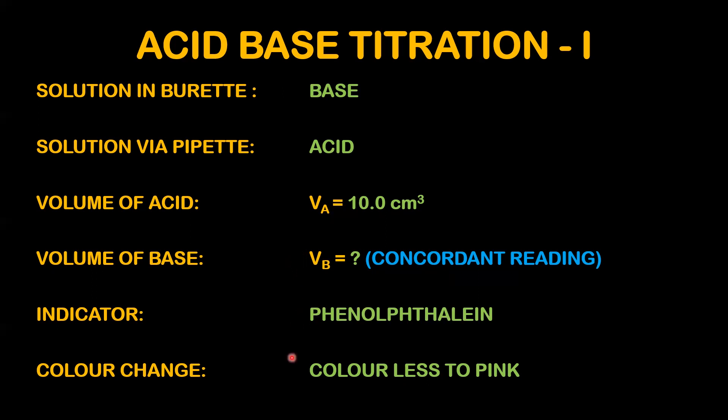When the indicator is used, and you add the base drop-wise, the color changes from colorless to pink in the conical flask. There is acid in the conical flask, and in phenolphthalein the color with acid is colorless. The end point is reached when a small quantity of base is added and the color changes.